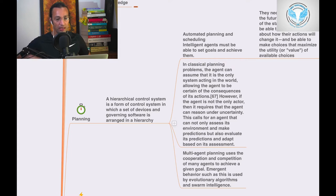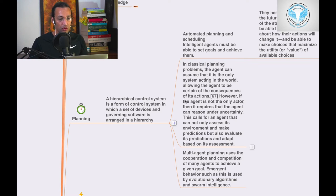Automated planning and scheduling: intelligent agents must be able to set goals and achieve them. In AI, planning means automated planning and scheduled intelligent agents must be able to set goals and achieve them.